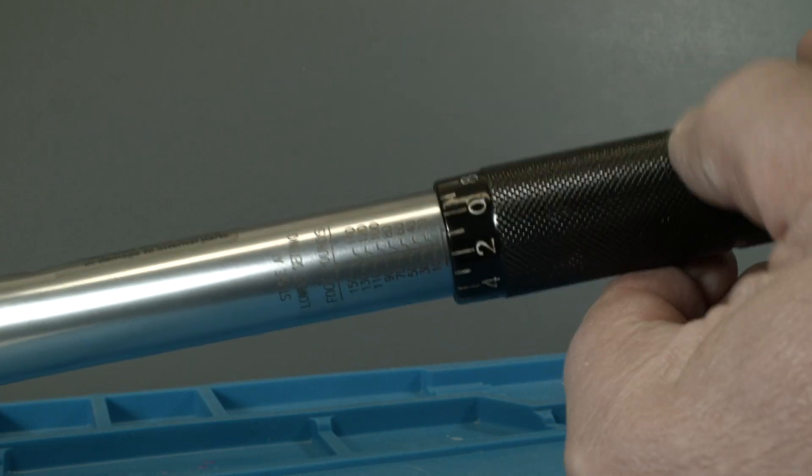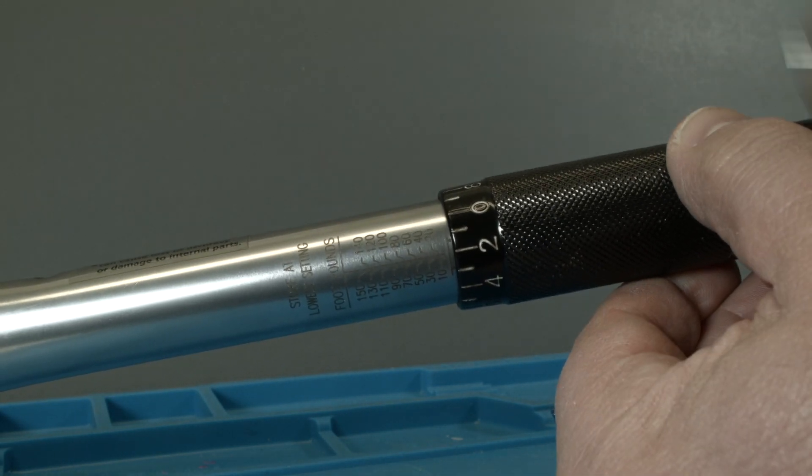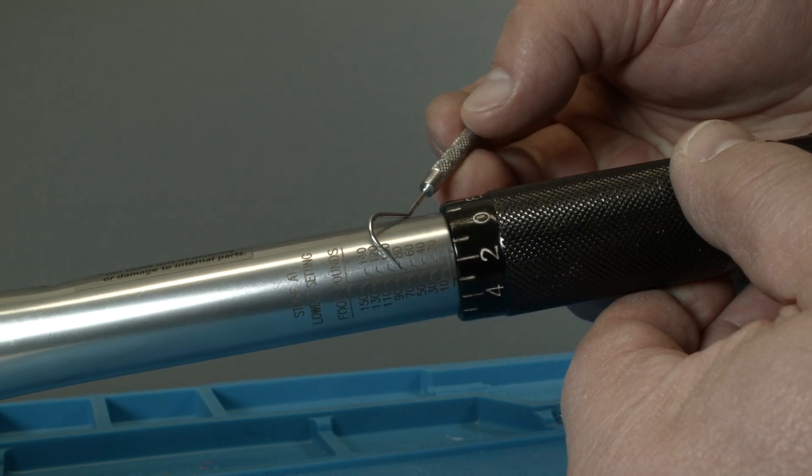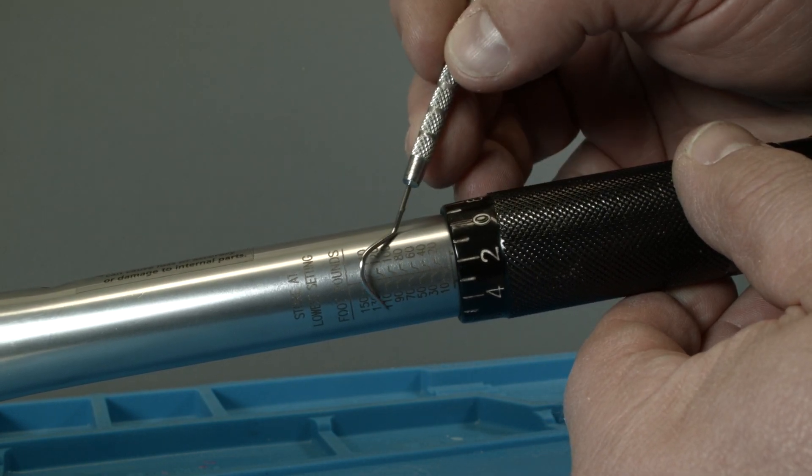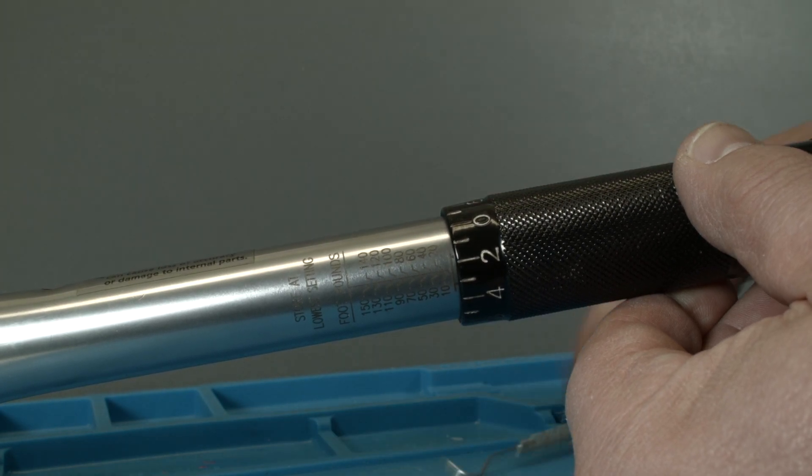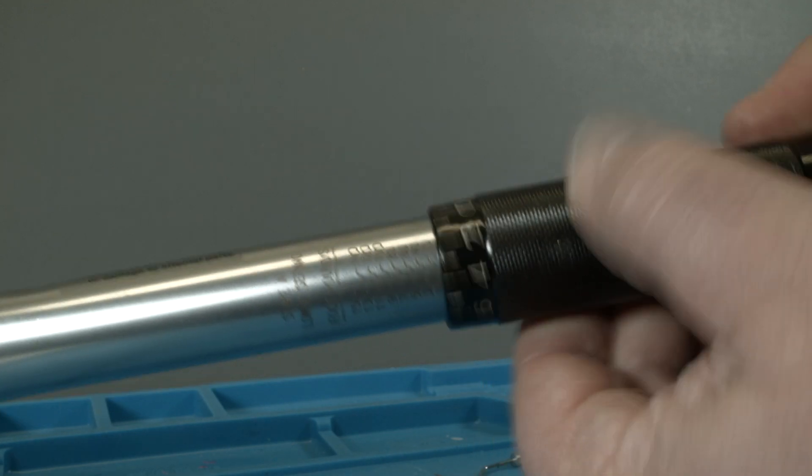Then you turn the handle clockwise until your zero hits the desired 110 foot-pounds. There is a little line on it. It goes a little down and over. That's the point you have to align the zero to.